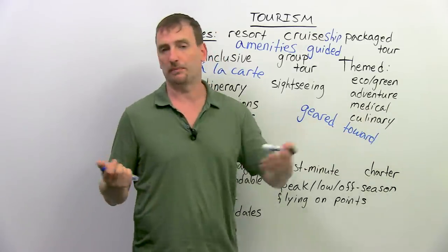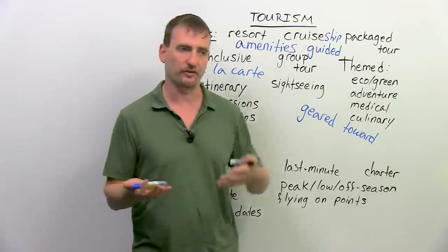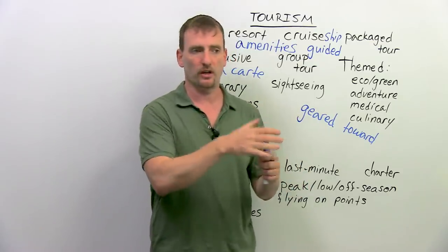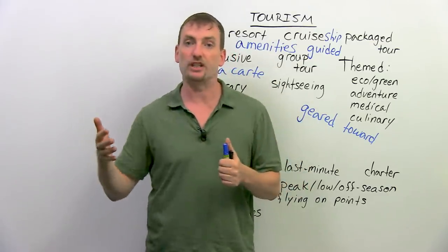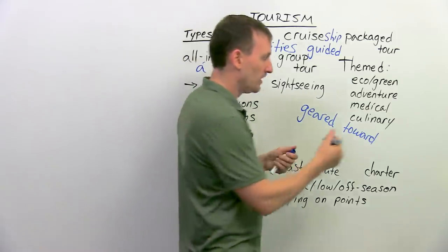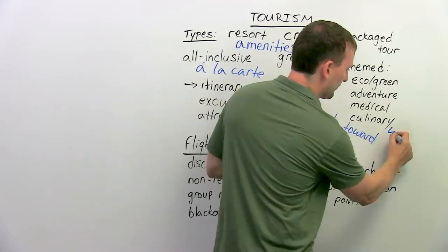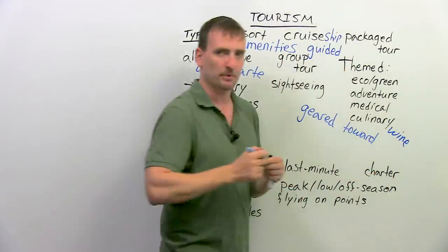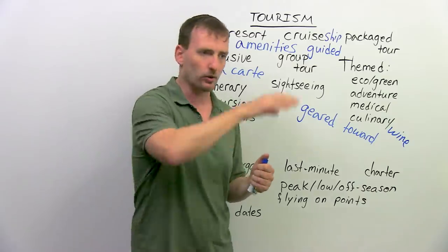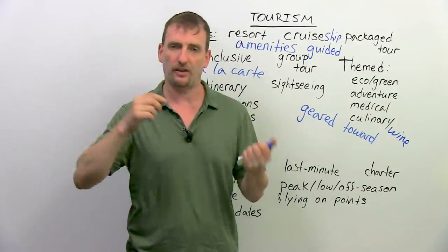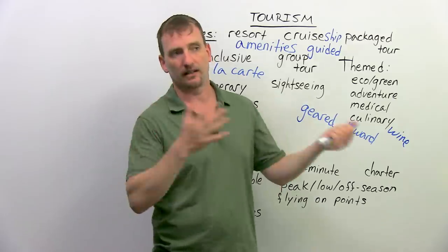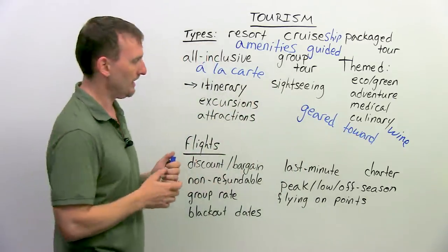And culinary tours — some people want to try different foods from different parts of the world. So they go on tours where they're taken to all the different regions of a place to taste the different foods. A wine tour is also very common. For example, in the States, a lot of people go to Napa Valley and visit all the different wineries, try their wine, eat their local dishes, and basically get a tour of the whole area.